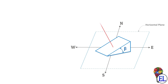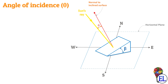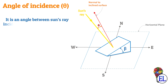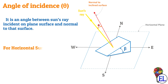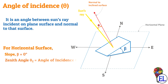Now if we introduce the normal, or perpendicular, to this inclined surface, and consider a sun's ray incident on the surface, the angle formed between these two rays is known as the angle of incidence. We define it as the angle between the sun's ray incident on the surface and the normal to the surface, denoted by theta. For a horizontal surface only, the tilt angle beta equals zero and the zenith angle theta z equals the angle of incidence theta.